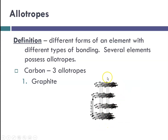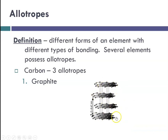The way graphite works — and this goes on in all directions — is that because of the way these little sheets are arranged, graphite can slide over itself, and that's what makes it a good lubricant.